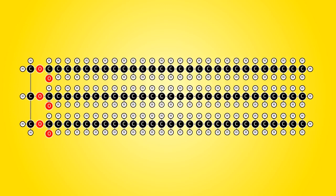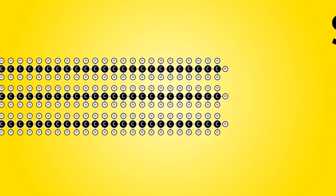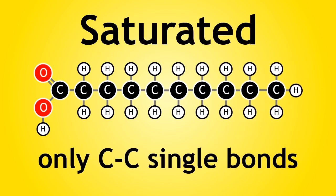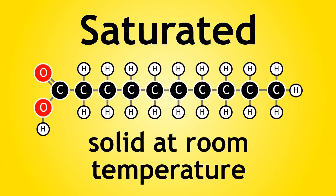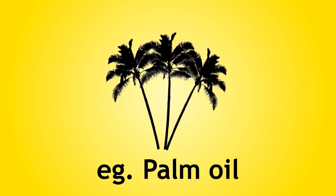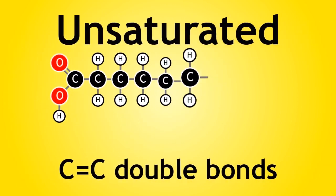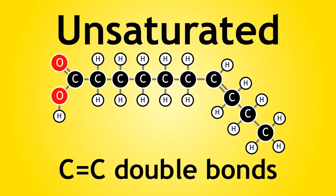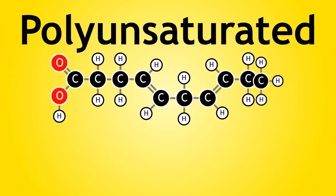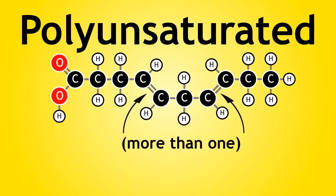These tails can be saturated or unsaturated. Saturated means that there are only carbon-carbon single bonds. Saturated plant oils are solids at room temperature and are also known as vegetable fats. An example of a saturated plant oil is palm oil from oil palm trees. Unsaturated means that there are carbon-carbon double bonds somewhere within the structure of the fatty acid tail. A monounsaturated oil has only one carbon-carbon double bond, while a polyunsaturated oil has more than one. Most unsaturated oils are liquids at room temperature.